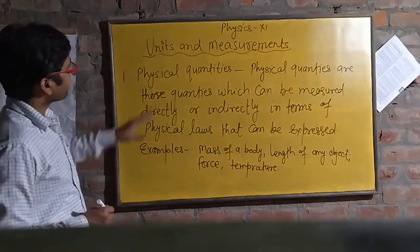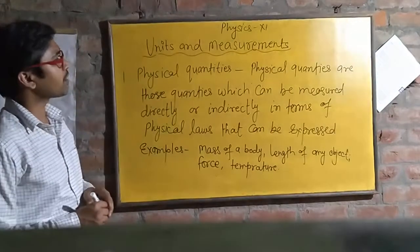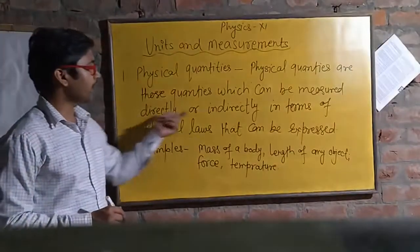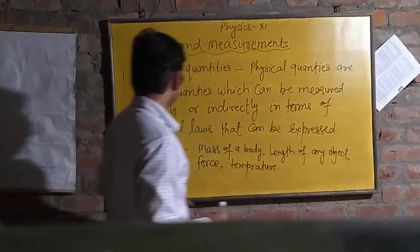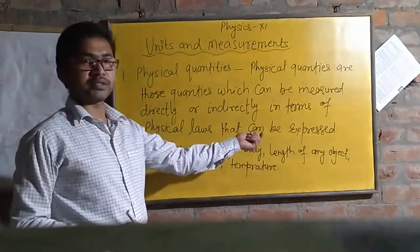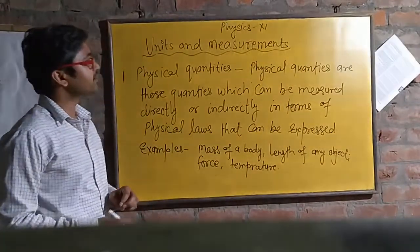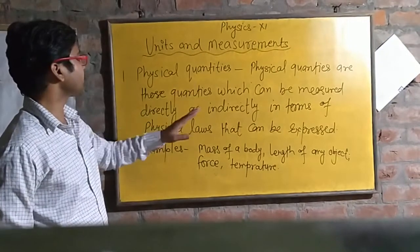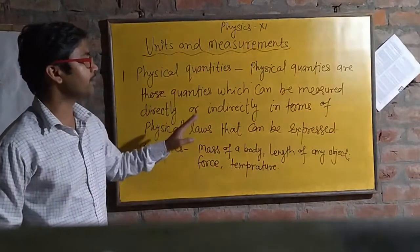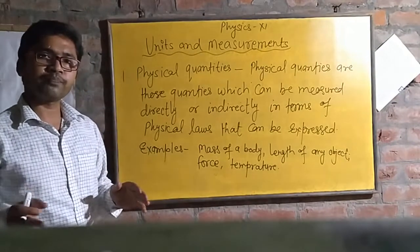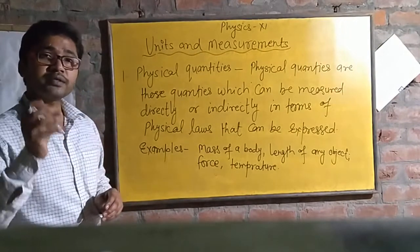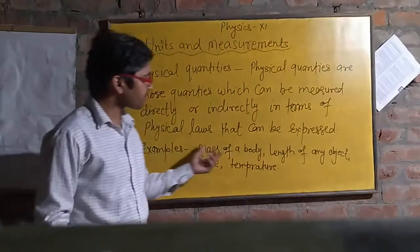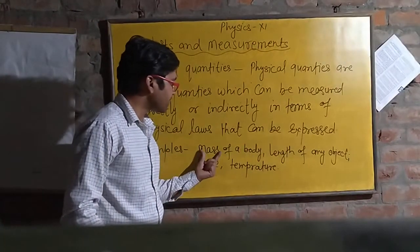Our topic is physical quantities. Physical quantities are those quantities which can be measured directly or indirectly in terms of physical laws and can be expressed. For example, mass of the body — mass is a physical quantity.